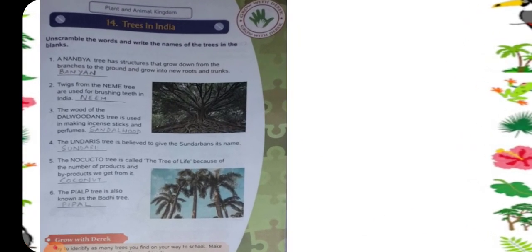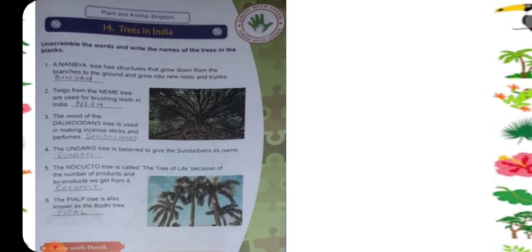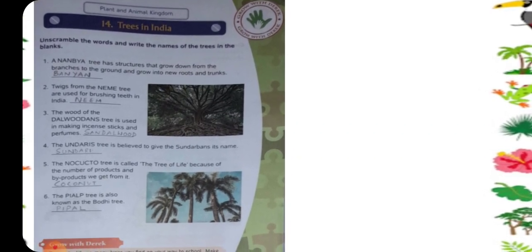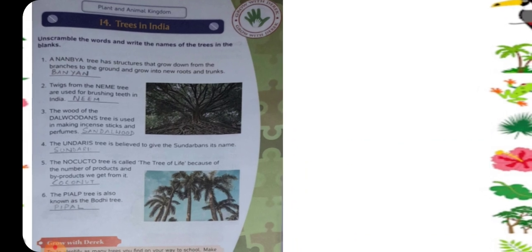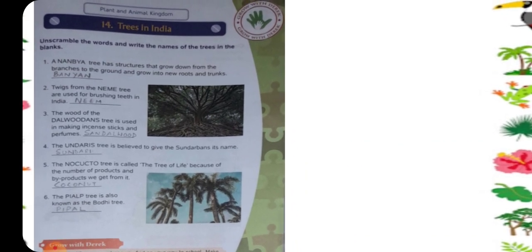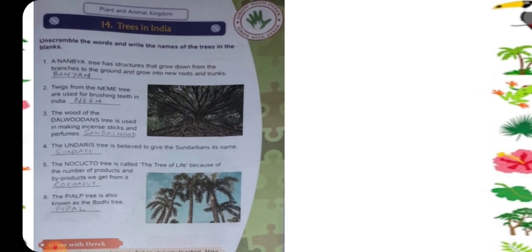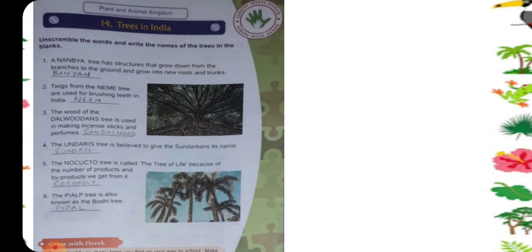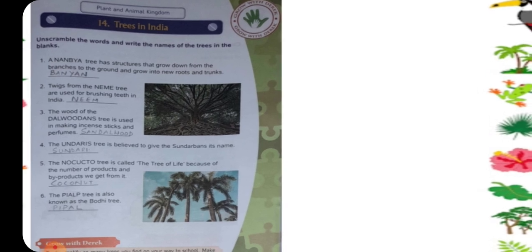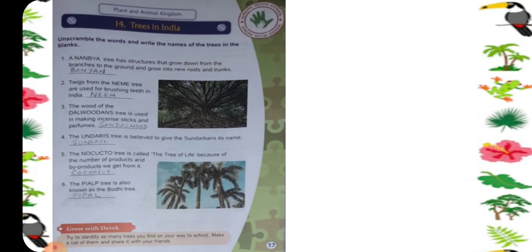First, the trees in India. Unscramble the words and write the names of the trees in the blank. A tree has structures that grow down from the branches to the ground and grow into new roots and trunks. So which tree is it? It is banyan tree. So you write down banyan, B-A-N-Y-A-N.